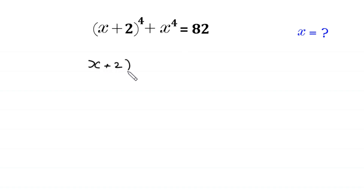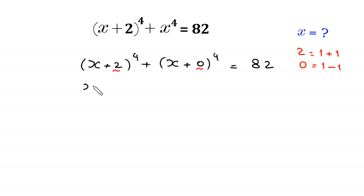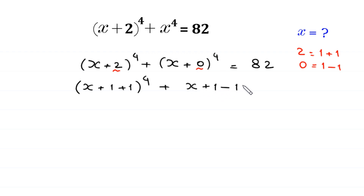(x+2)⁴ + x⁴ can be rewritten as (x+1+1)⁴ + (x+1-1)⁴ = 82, since 2 can be written as 1+1 and 0 can be written as 1-1.